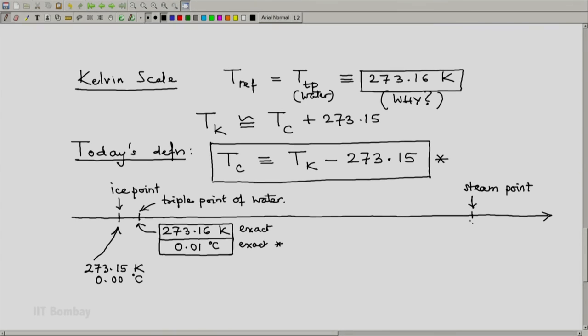Similarly, the steam point now turns out to be, when measured, 373.15 Kelvin. And on the Celsius scale, by the definition of the Celsius scale, this will be almost exactly, but not really exactly, 100 degree C.